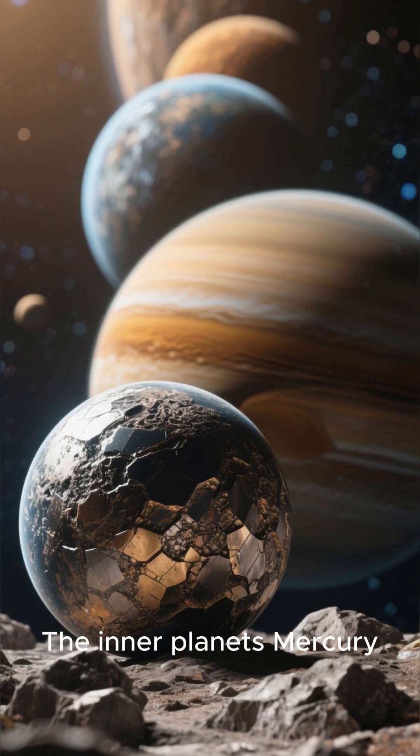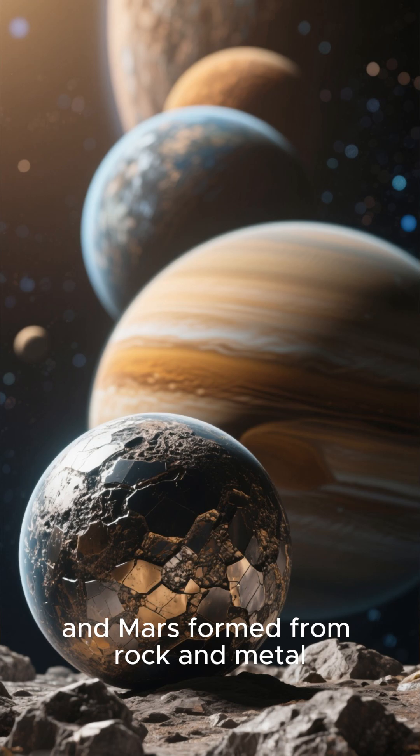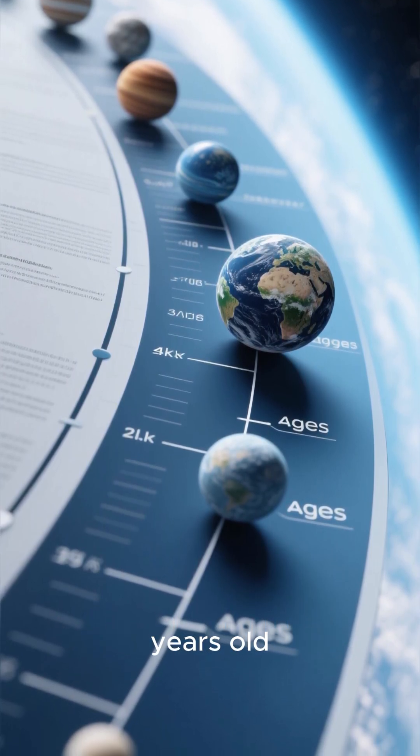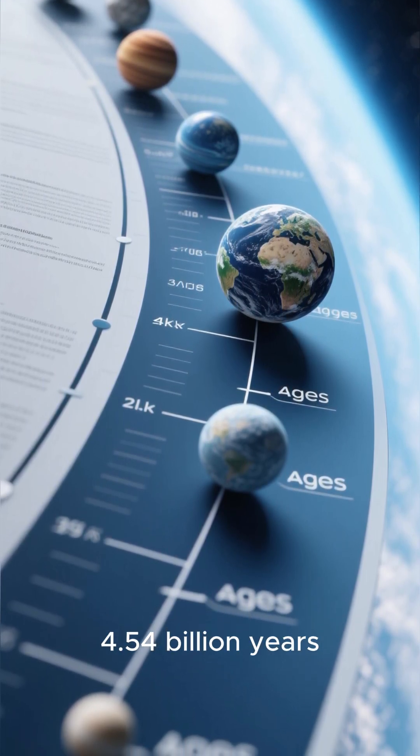The inner planets Mercury, Venus, Earth and Mars formed from rock and metal close to the sun. Each is about 4.5 billion years old, with Earth clocking in at 4.54 billion years.